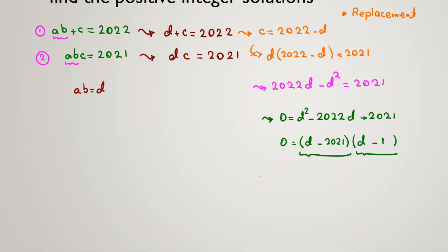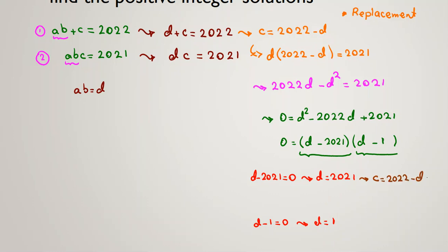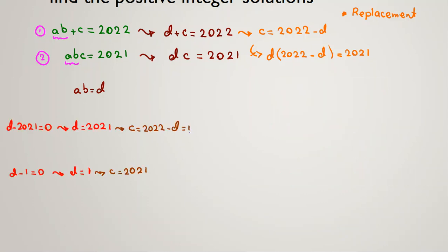So either D minus 2021 equals 0, giving D equals 2021, or D minus 1 equals 0, giving D equals 1. Since C equals 2022 minus D: in the first case, C equals 2022 minus 2021 equals 1; in the second case, C equals 2022 minus 1 equals 2021.